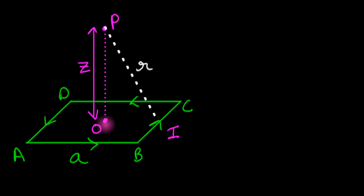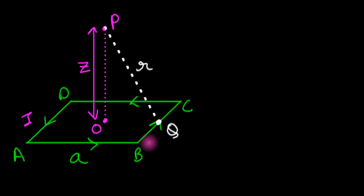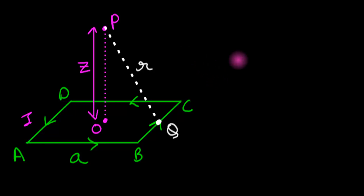Since point P lies on the axis, the perpendicular from P to BC must land on the midpoint of BC. Let's call that point Q. So Q is the midpoint of B and C — you can convince yourself of this by a symmetry argument: regardless of where P is along the axis, the perpendicular will always hit the midpoint.